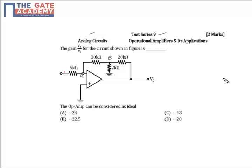In this node A, assume sum of the incoming current is equal to sum of outgoing current. This current is I1, this current is I2. So at node A, sum of incoming current I1 is equal to I2.